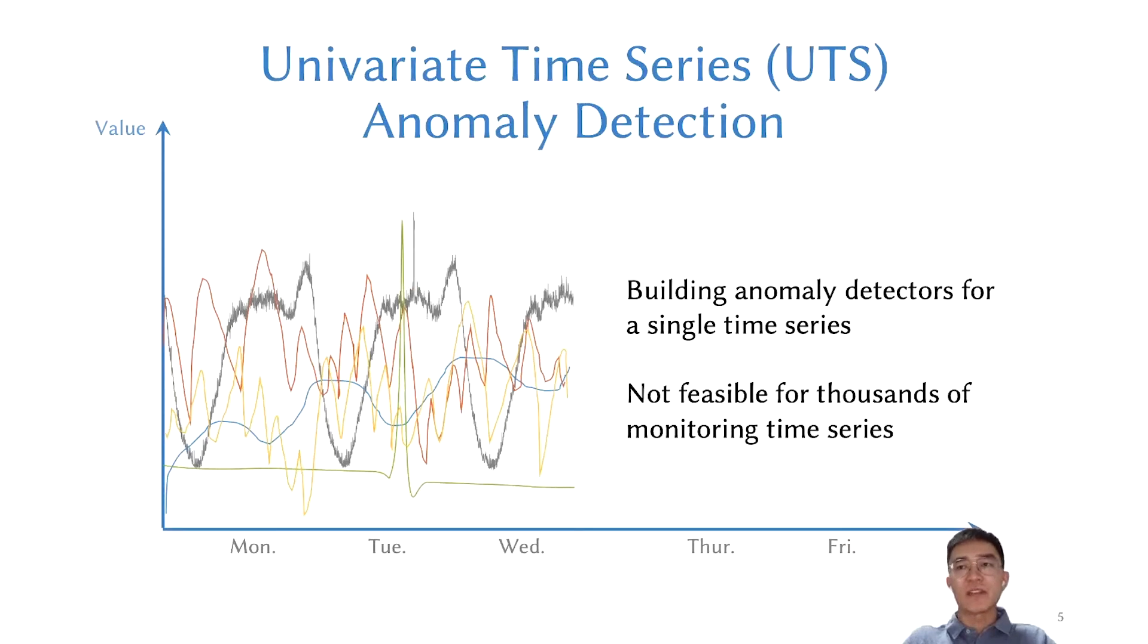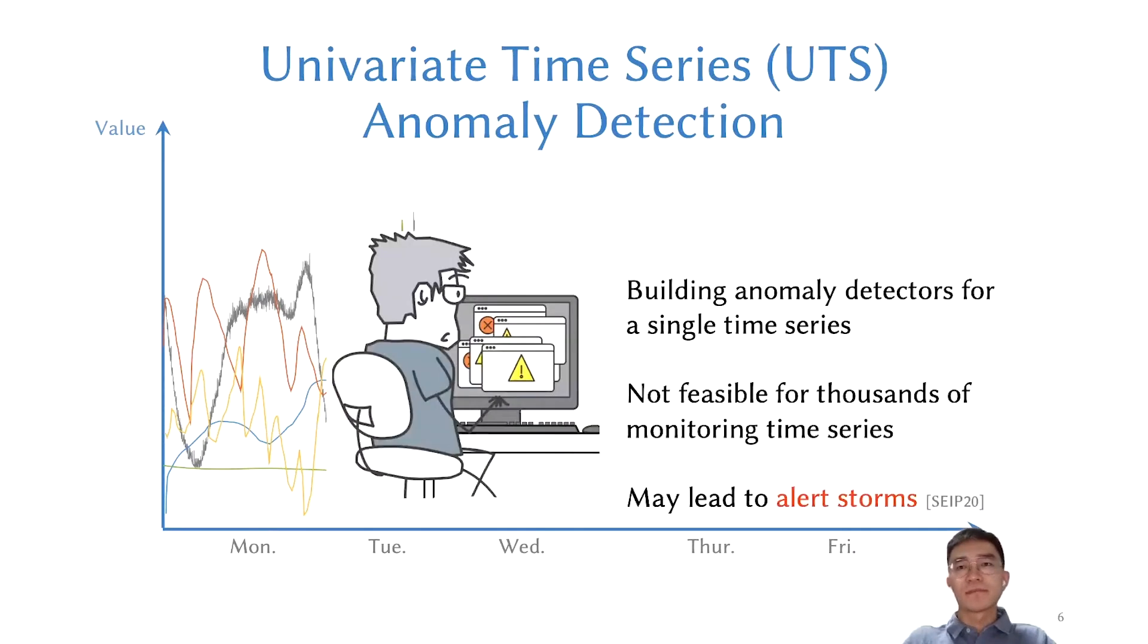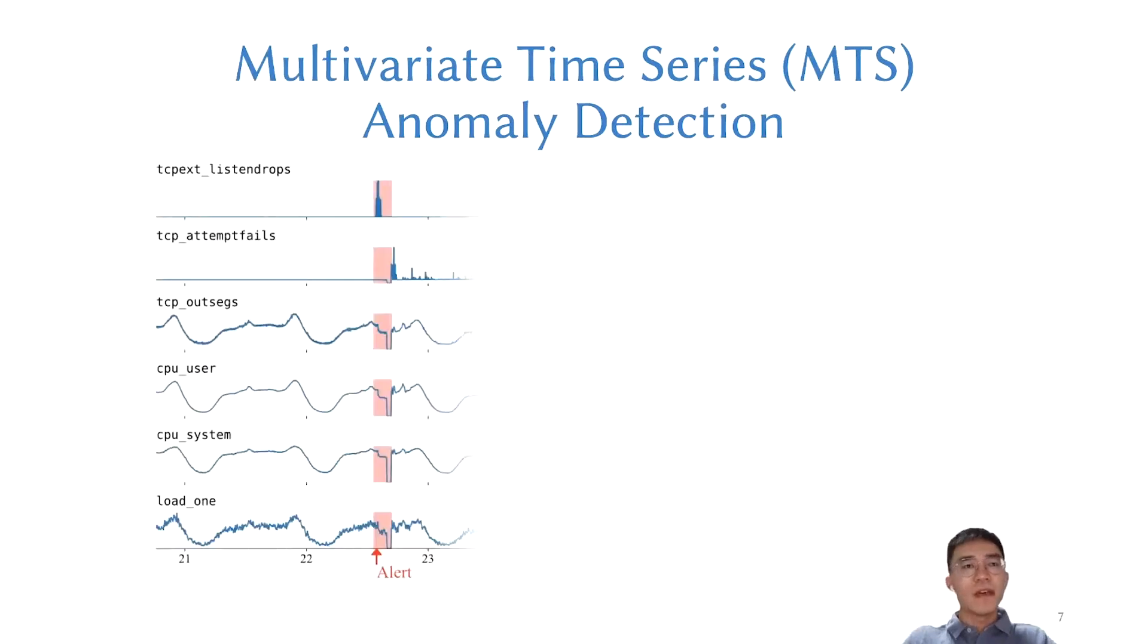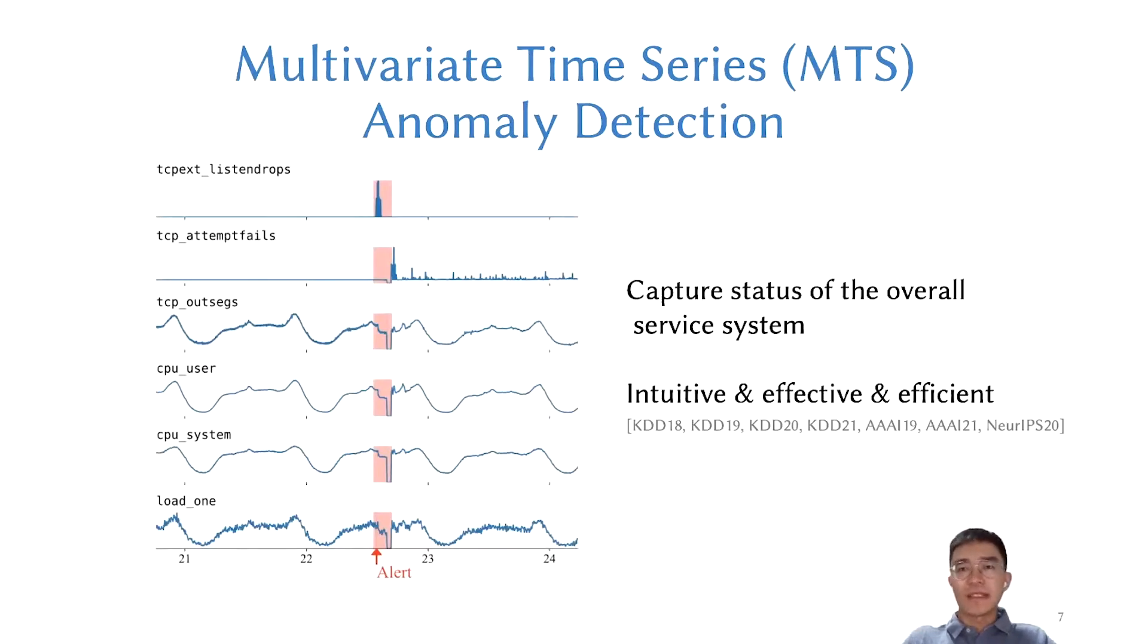However, UTS anomaly detection is not feasible when monitoring thousands of time series, because building the model for each time series needs to manually choose the proper anomaly detection model and tune parameters. Besides, the UTS anomaly detection method cannot capture the complex relationship among different time series. They tend to cause alert storms and annoy operators. Therefore, the heated research topic is multivariate time series anomaly detection. Intuitively, modeling the expected data of service can benefit from more information in the MTS. These methods can capture the status of overall service systems more effectively and efficiently.